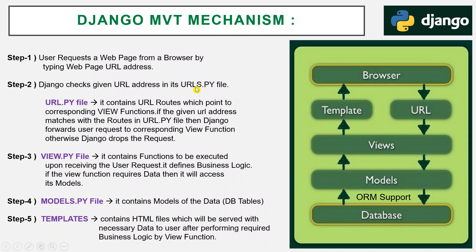The urls.py file contains URL routes which point to corresponding view functions. If the given URL address matches with the routes in urls.py, then Django forwards the user request to the corresponding view function. Otherwise, Django drops the request.